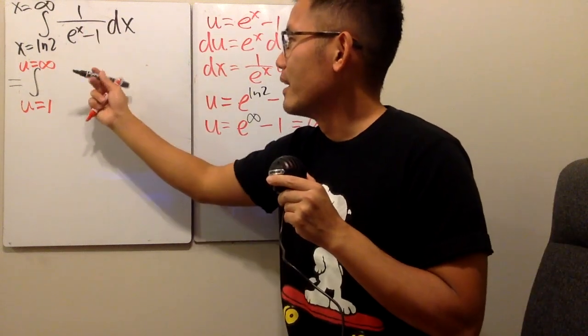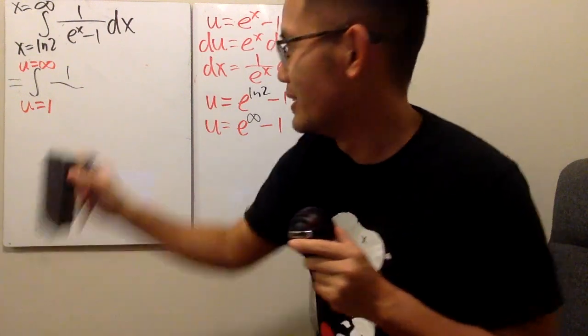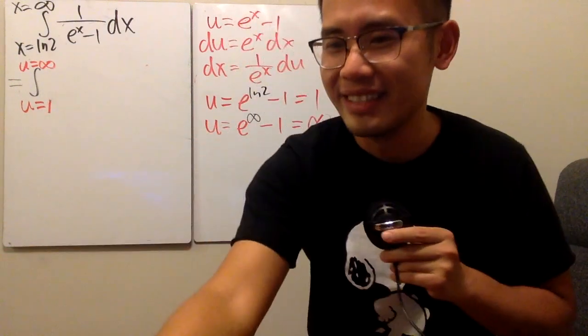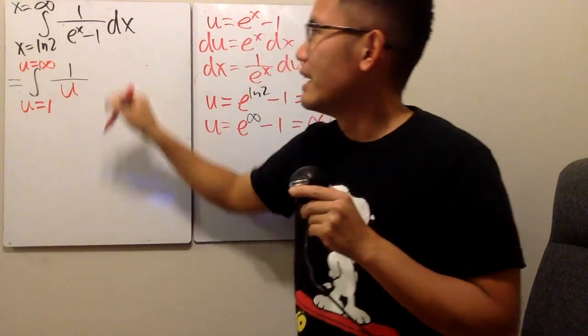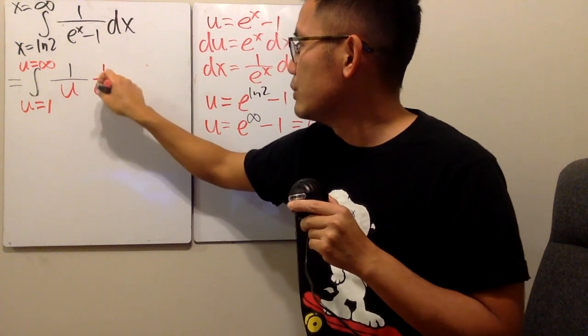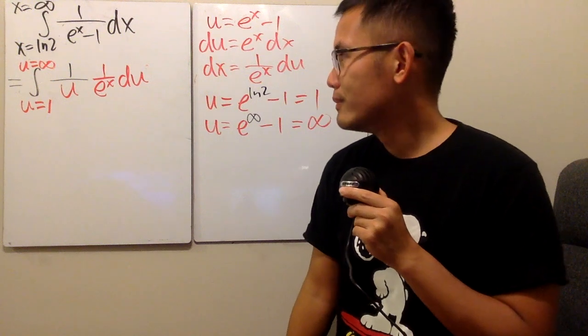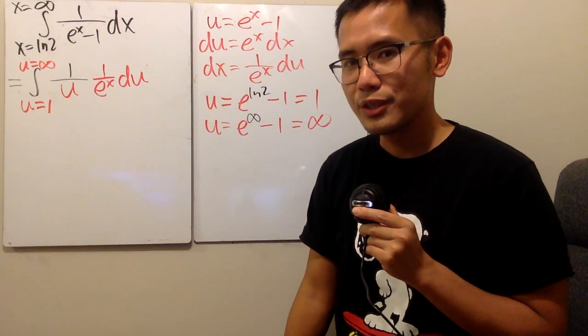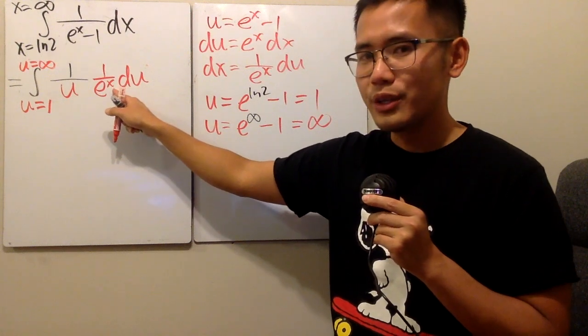Now go back here. Here we have one over, the bottom is just our u. One over u, dx is this, namely one over e to the x, du. Uh-oh, nothing can be canceled yet. Because e to the x is still here.